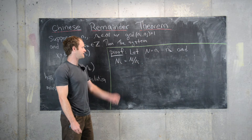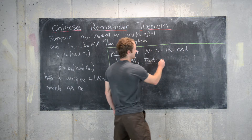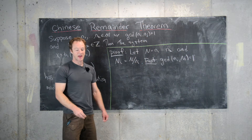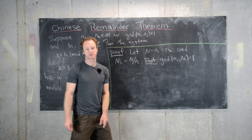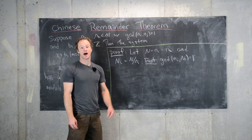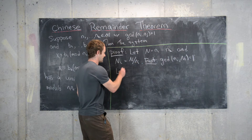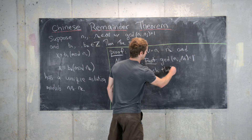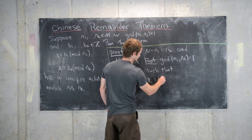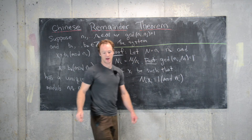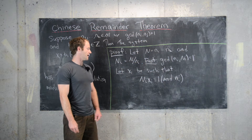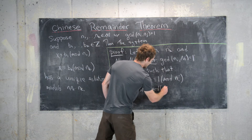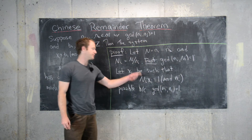So we have our setup of capital N and capital N_i, and we just established that the GCD of little n_i and capital N_i equals 1. That is important because it means that capital N_i has an inverse modulo little n_i. Let x_i be that inverse modulo n_i — in other words, let x_i be such that capital N_i times x_i is congruent to 1 mod n_i. This is possible because the GCD of N_i and n_i is 1, as we proved in a previous video.